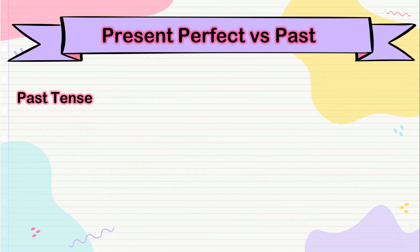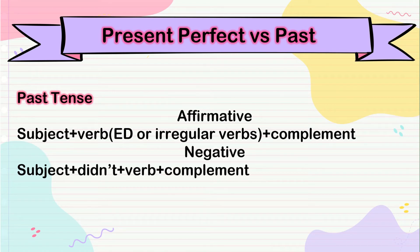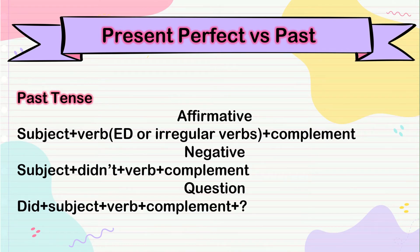So we also have the past tense. In affirmative form we have: subject, the verb plus -ed if it is regular, or the irregular verb form, plus complement. Negative: subject plus didn't plus the verb in the base form plus the complement. For a question: did plus subject plus verb plus complement and the question mark.